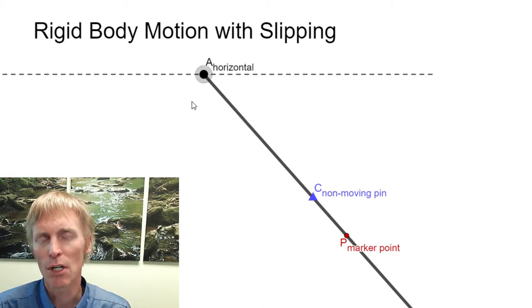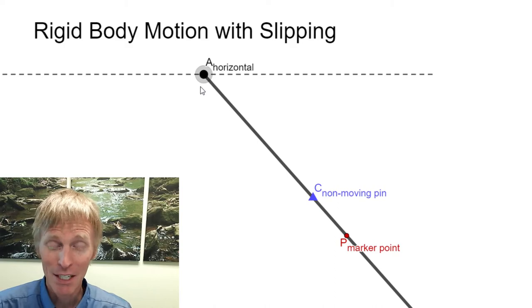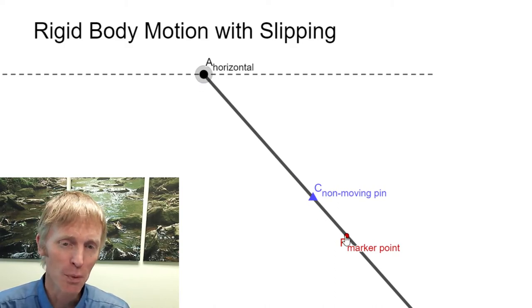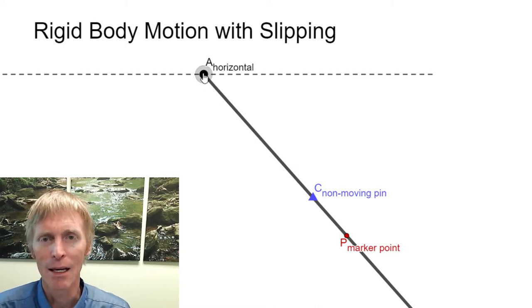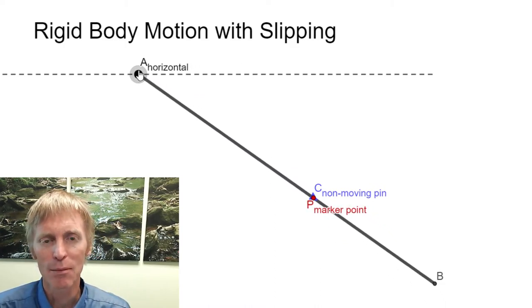Also note that you're going to need to use an R vector in this problem, a position vector going from A to P. That will be a relative position vector of P relative to A. Hopefully that helps you see how this moves here.